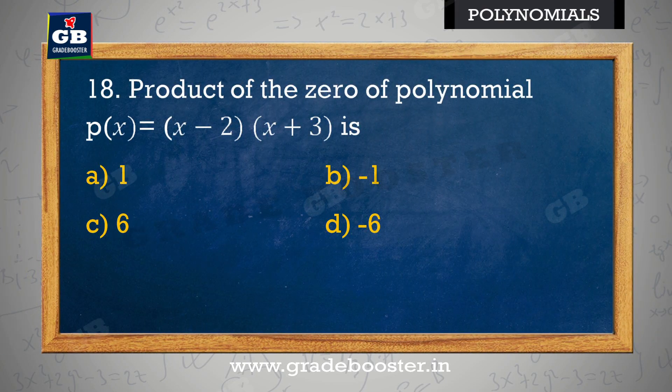Product of the zeros of polynomial p(x) = (x − 2)(x + 3) is: polynomial p(x) = (x − 2)(x + 3) ke zeros ka product hai — a) 1, b) −1, c) 6, d) −6.